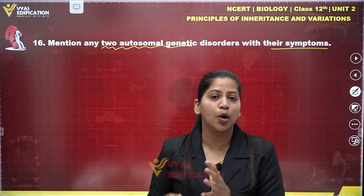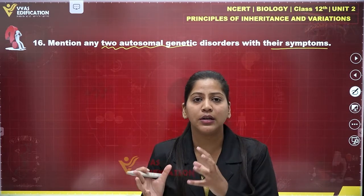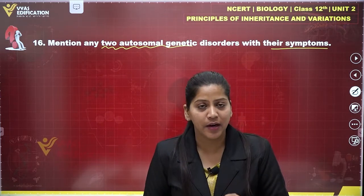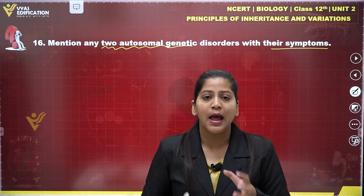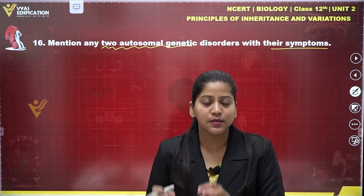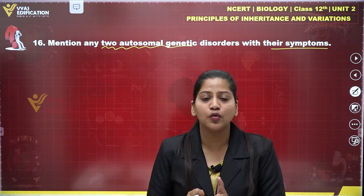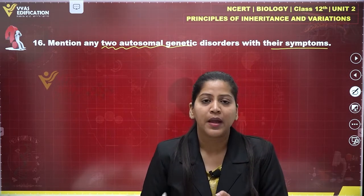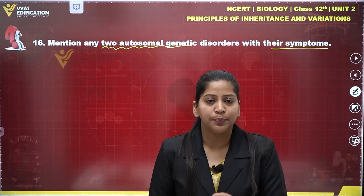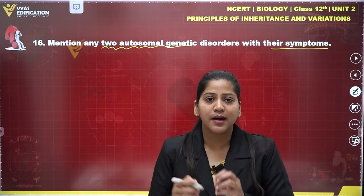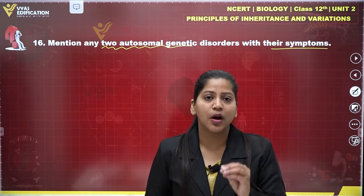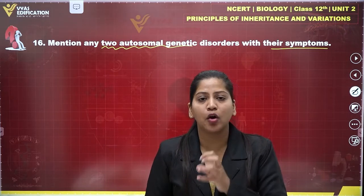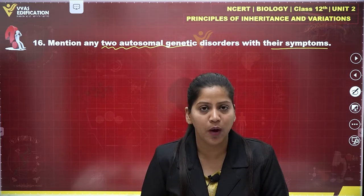The first disorder we are discussing is Down syndrome. Down syndrome is an autosomal genetic disorder — specifically autosomal aneuploidy — which arises by gaining an extra copy of chromosome number 21.